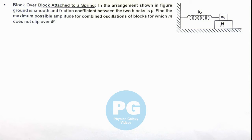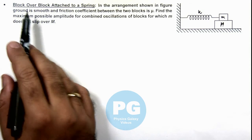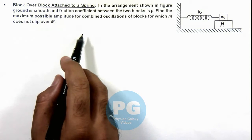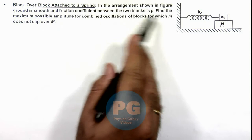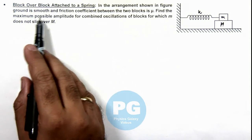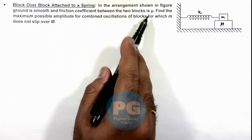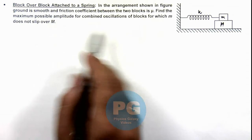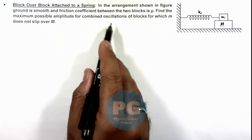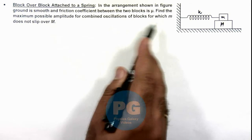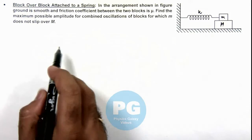This illustration is about the analysis of block over block attached to a spring. In the arrangement shown in figure, ground is smooth and friction coefficient between the two blocks is mu. We are required to find the maximum possible amplitude for combined oscillations of blocks for which m does not slip over M.